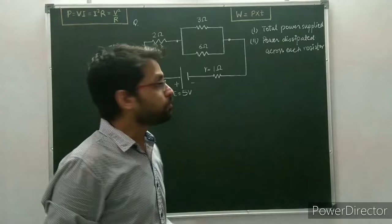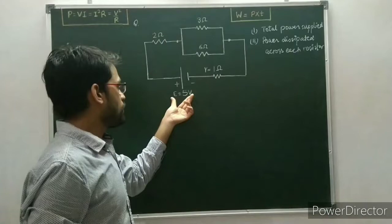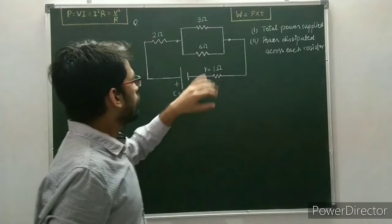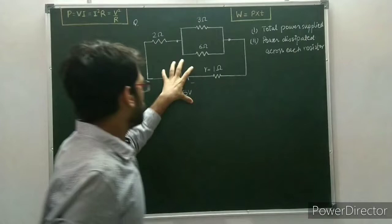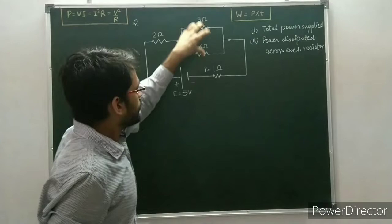Now come to the next problem. In this problem we have a circuit diagram having three resistors and one cell having EMF of 5 volt and internal resistance of 1 ohm. We have to calculate the total power supplied by the cell, and the second part is the total power dissipated across each resistor.